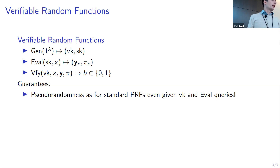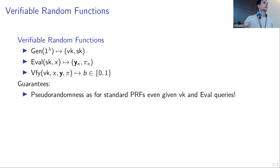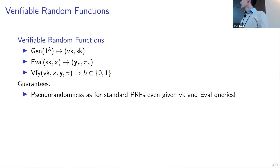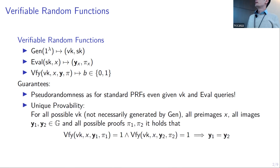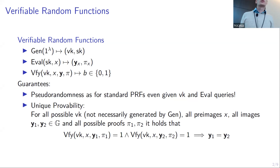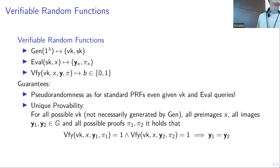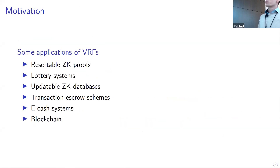There is also the strong property called unique provability: even from maliciously generated verification keys, there is no way to prove two different images to be the correct image for the same pre-image. Formally: for any possible verification key, all pre-images, two images, and any proofs — if both images verify with any proof, then they must be the same image. Now let's look at some historic constructions to motivate our work. One of the first non-RSA-based constructions was the Lysyanskaya VRF, essentially an adaptation of the Naor-Reingold PRF with a group element exponentiated to a product, using a pairing scheme to consecutively verify all factors.